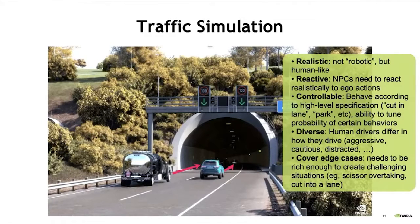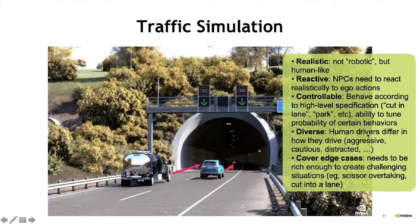Traffic models need to be realistic — they should behave like humans, not robots. They need to be reactive, so if my ego vehicle makes an action, everyone should react in realistic ways. They need to be controllable, because I want to specify the exact scenario I want to test — placing certain behaviors on other vehicles and expecting them to actually behave that way. And of course they need to be diverse: human-like, capturing aggressive, cautious, and distracted behaviors. They also need to be rich enough to cover edge cases like overtaking or cutting into a lane.